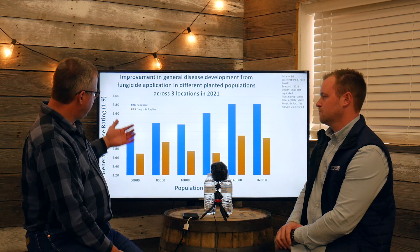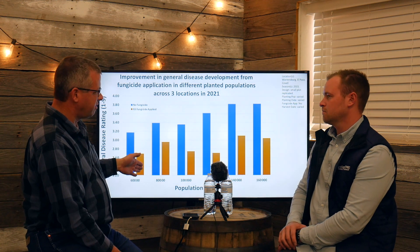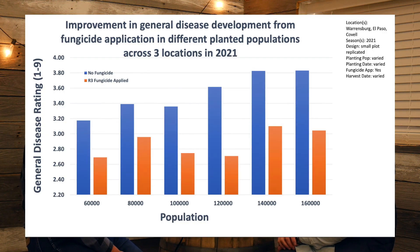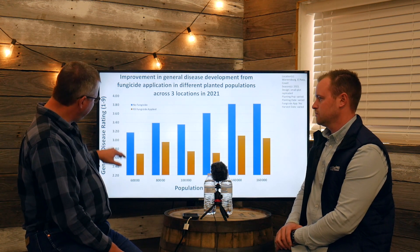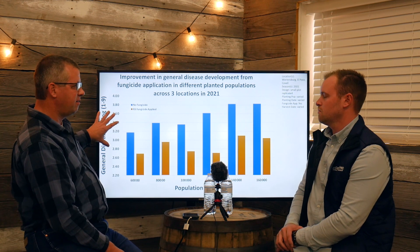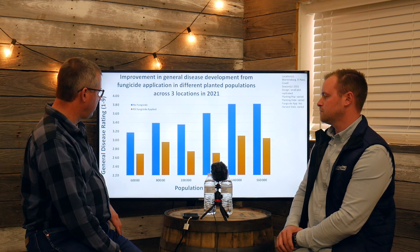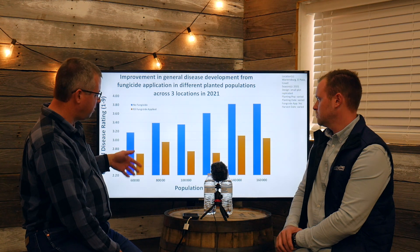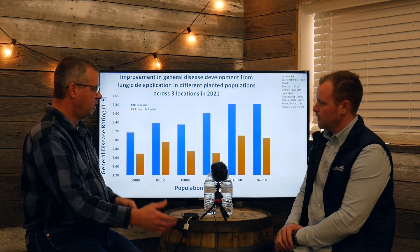When we looked at disease development across these populations, the blue is no fungicide and the orange is fungicide, rated on a one-to-nine scale — where one means you couldn't find a single drop of disease and a nine means it's a disaster, so lit up with disease it's going to lose a bunch of yield. We're looking at fairly low levels of disease development, partly because of the later planting date. We see a significant improvement in disease rating when we apply the fungicide.